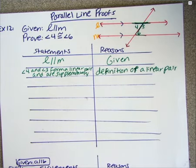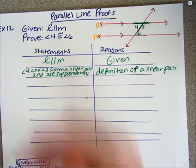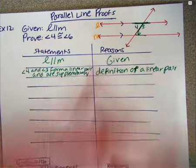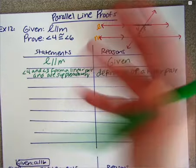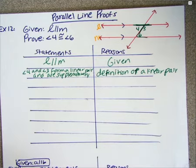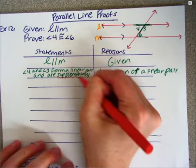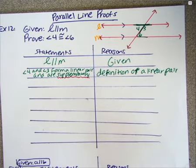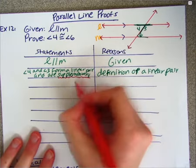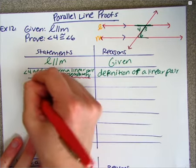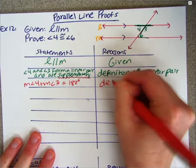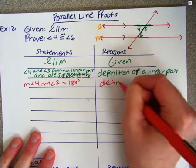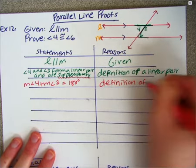It's helpful to grab key words from previous statements to move forward in the proof. I see the word 'supplementary' — what does it mean to be supplementary? It means they add up to 180. So I can say: the measure of angle four plus the measure of angle three equals 180, by the definition of supplementary.